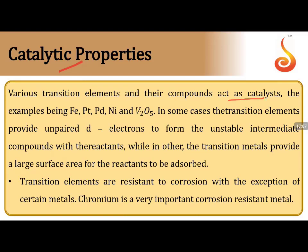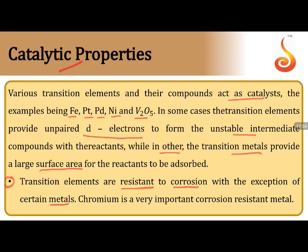Various transition elements and their compounds act as catalysts — for example, iron, platinum, palladium, nickel, and V₂O₅ are commonly seen in industrial preparations. In some cases transition elements provide unpaired electrons to form unstable intermediates; in other cases they provide a large surface area for adsorption of gases, making chemical reactions faster. They are also generally resistant to corrosion.